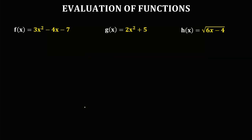We have these given functions f of x, g of x, and h of x. To solve for f of 3, since f of 3 comes from f of x but x is equal to 3, we need to substitute 3 for x in the equation of f of x.